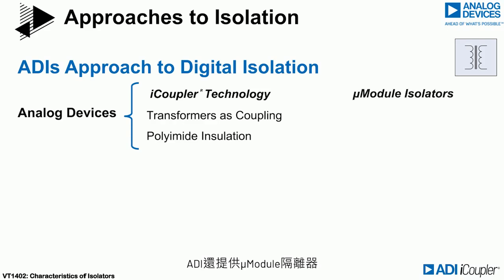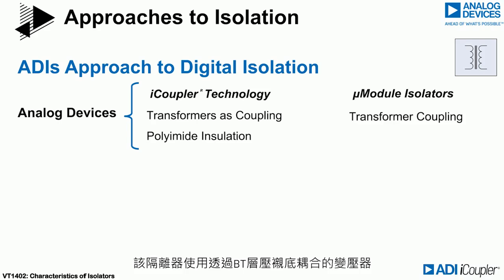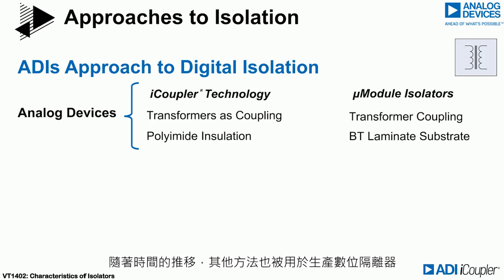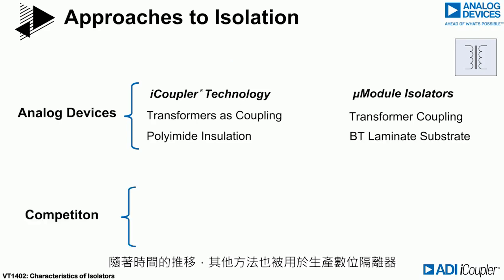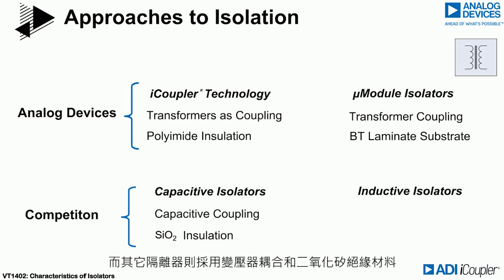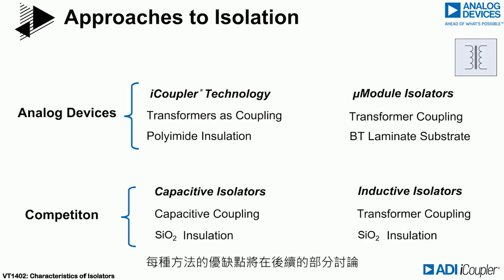Analog Devices also offers micromodule isolators that use transformer coupling through a BT laminate substrate. Over time, other approaches have been used to produce digital isolators. Some isolators use capacitive coupling with silicon dioxide, while others use transformer coupling with silicon dioxide. The pros and cons of each approach will be discussed in later sections.